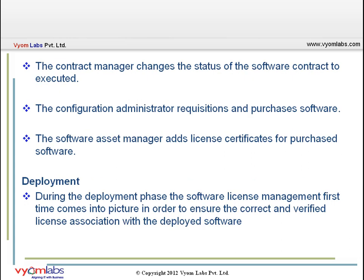Then the software asset enters the deployment stage. During the deployment phase, software license management first comes into picture to ensure correct and verified license association with the deployed software. In this stage, the software asset manager creates and schedules a license job to connect CIs to the license certificate created in the procurement stage. He then checks the compliance of the license. The configuration administrator also receives the software assets in this stage.